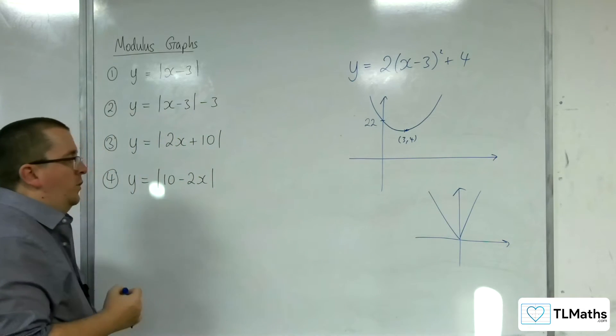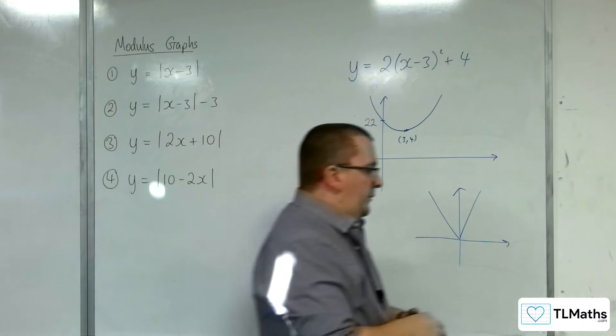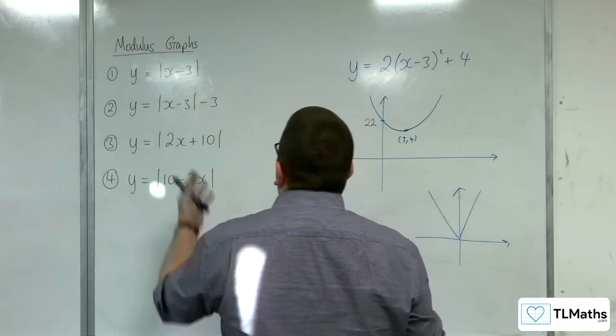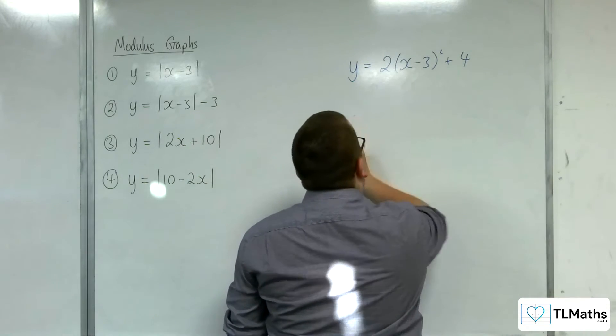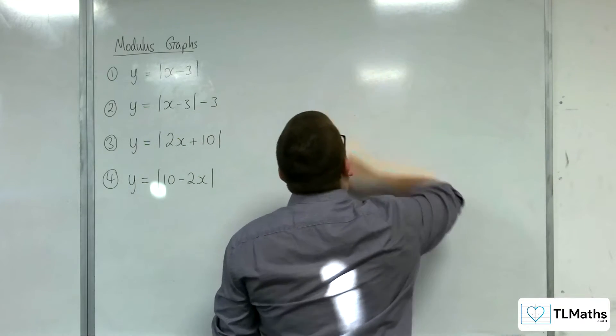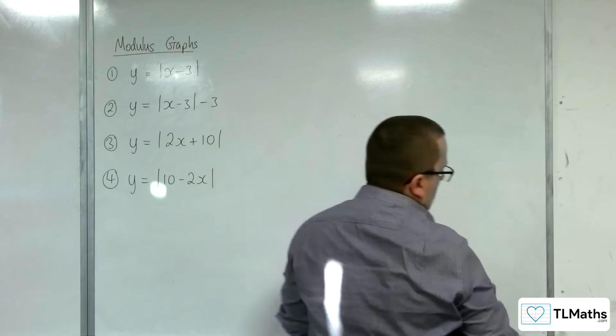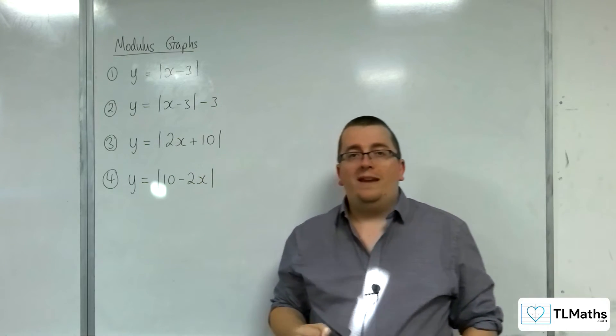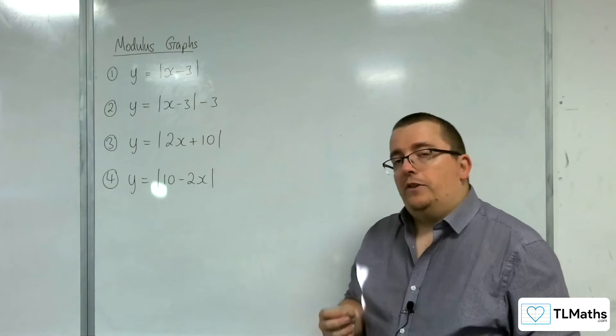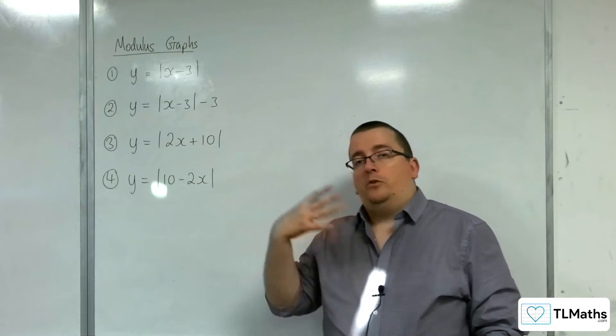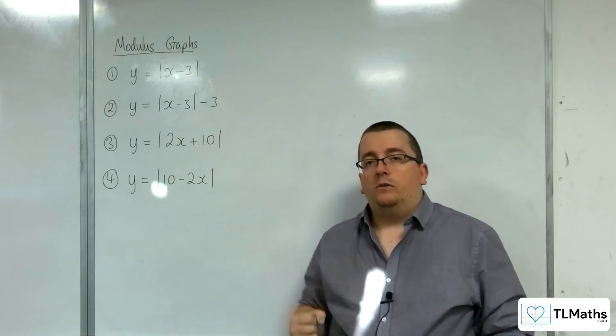So, the shapes that we're dealing with here have a similar property. They have a vertex, they also have symmetry. Parabolas have a line of symmetry, as do modulus graphs. So there's actually a lot of similarities between modulus graphs and parabolas.